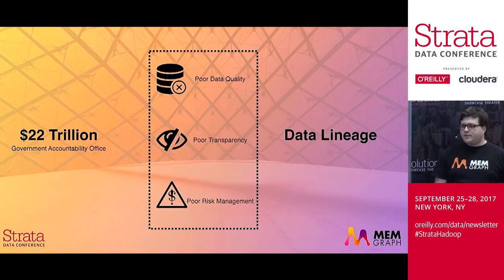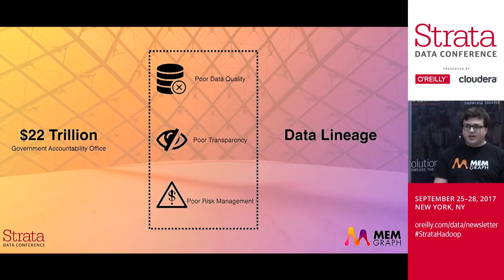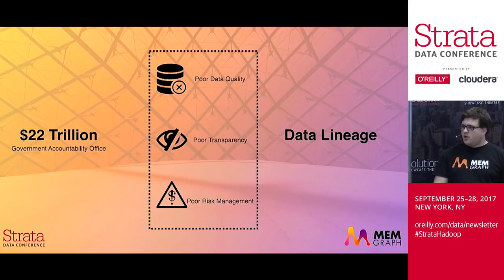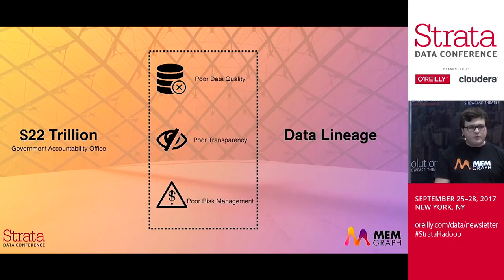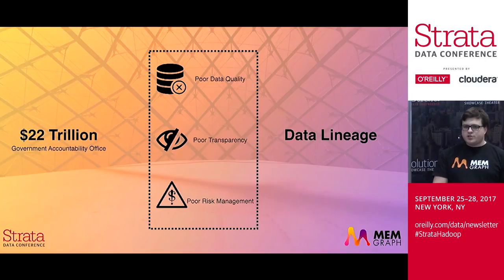The 2008 financial crisis took away $22 trillion from the US economy, according to the Government Accountability Office. It was mostly blamed on poor data quality, which in turn gave poor transparency and very poor risk management. After that, a lot of regulations were put in place for financial institutions to better manage their data, provide more accurate reports, and be able to prove the data. This is where we welcome the use case of data lineage.